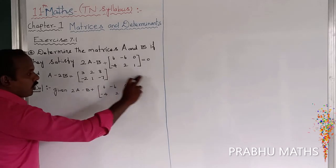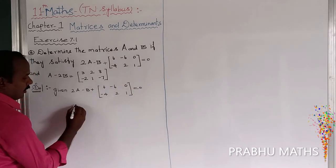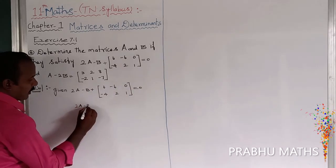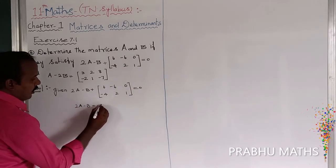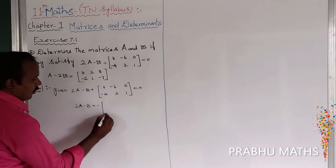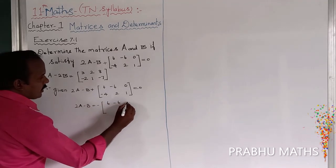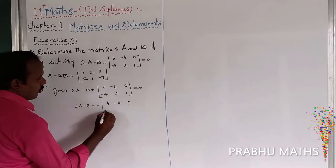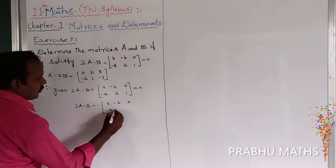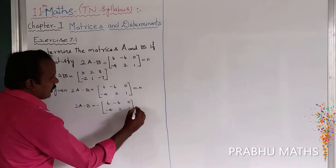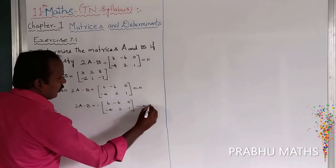The matrix is going to the right side. So 2A minus B is equal to minus half into 6, minus 6, 0, minus 4, 2, 1. That is equation number 1.